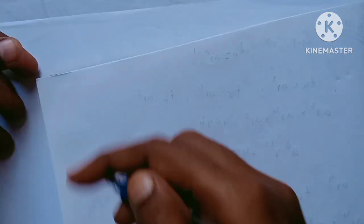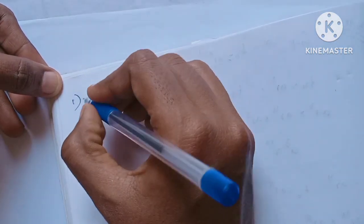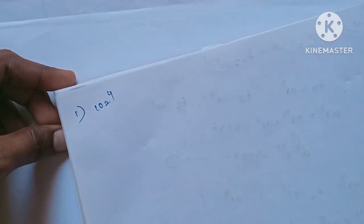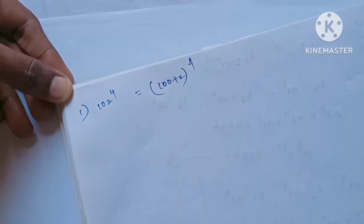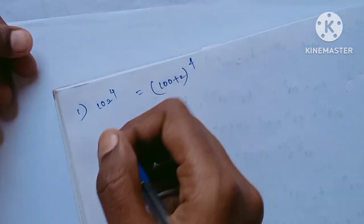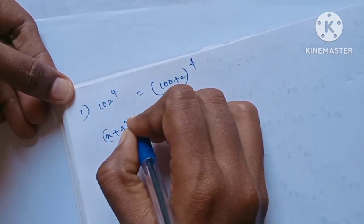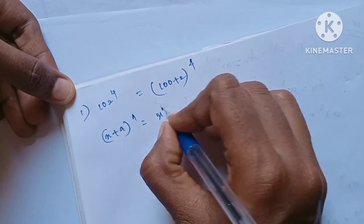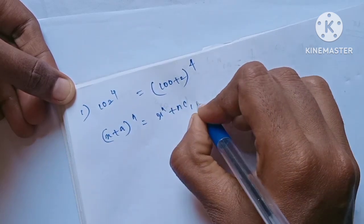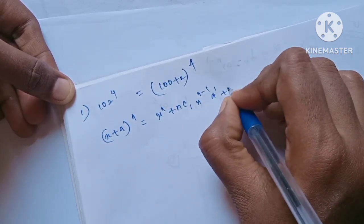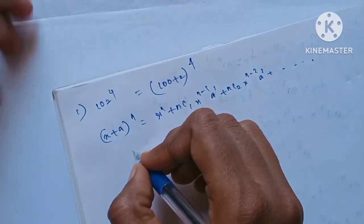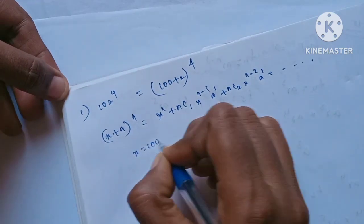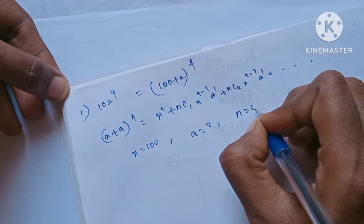How do you do this? Simplify. So it's 100 plus 2 whole power 4. So if you want to multiply, use x plus a whole power n. Here X is 100, A is 2, and N is 4.